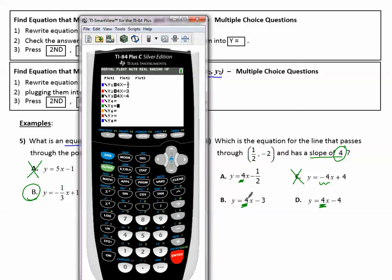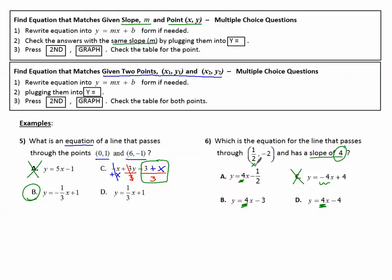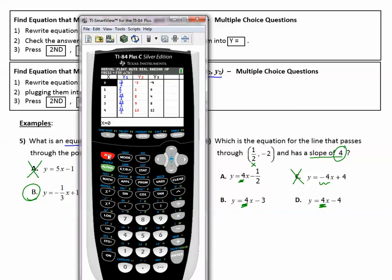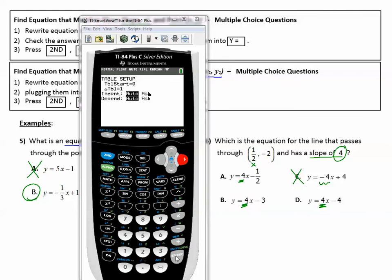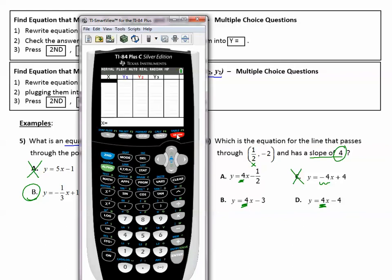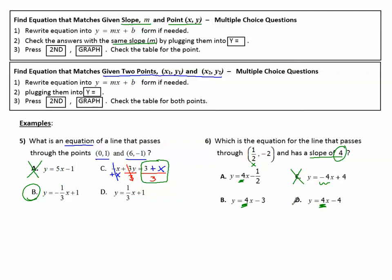So I've plugged all of the choices A, B, and D into the calculator and like last time we're going to look at the table. Second graph to get to the table and I'm looking for the point one half comma negative 2. Now I notice that the X's do not have halves in here. So here's something I can do to make the X have one half. Go to second table set, second window. Make the independent ask for the value. Press enter on ask. Now go back to the table and I can type in one half. One half, enter. And there's the three choices. I want the one that says negative 2 and that was the last graph. So choice D is the correct answer.